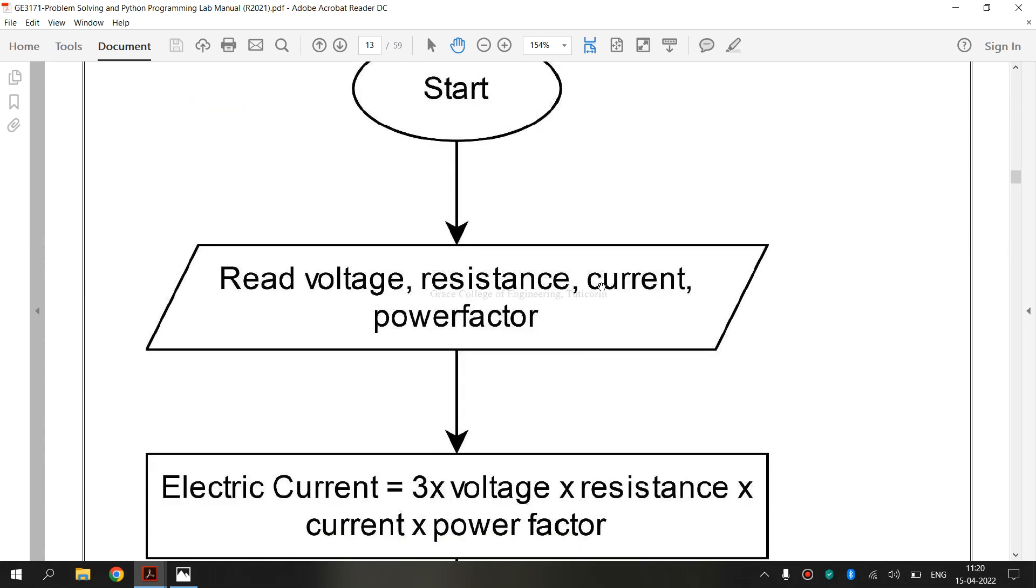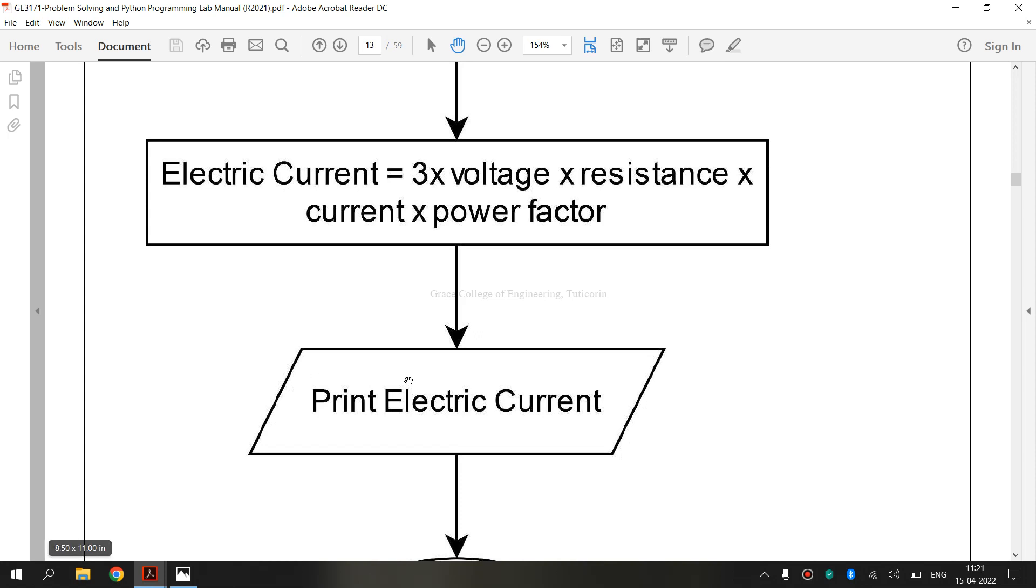Next is the symbol for data, input or output. The data flowchart shape indicates input to and output from a process. As such, the shape is more often referred to as input-output shape than a data shape. So input data, output data, the data symbol is used.